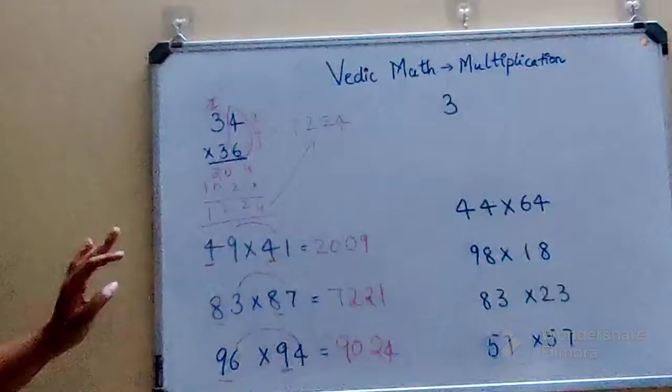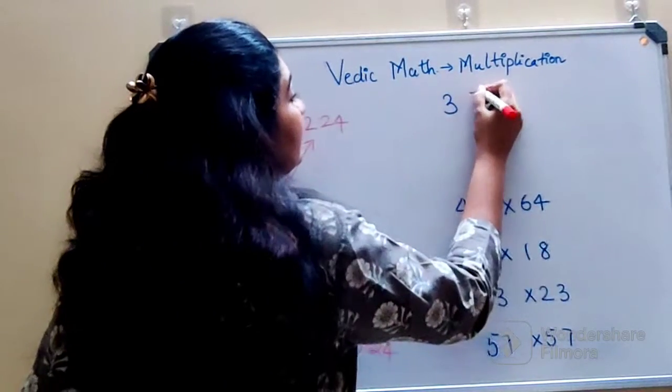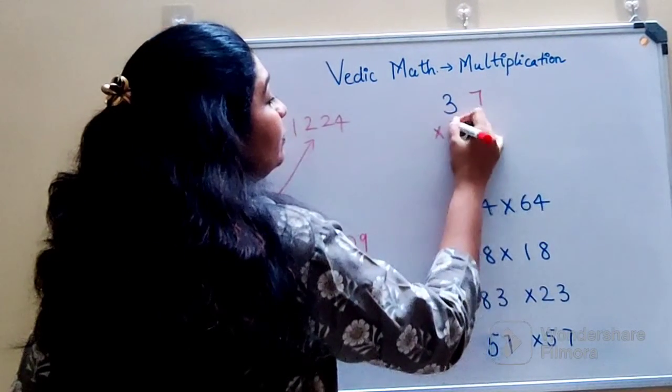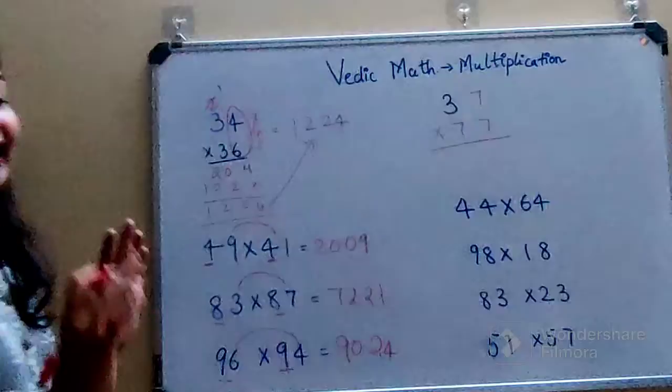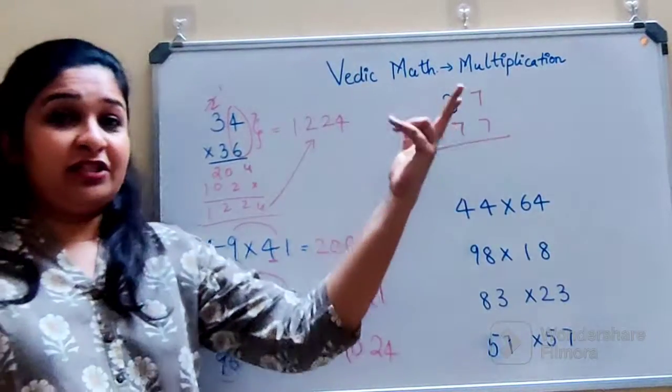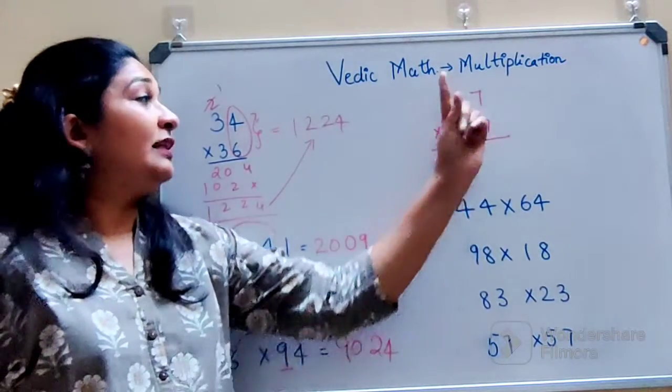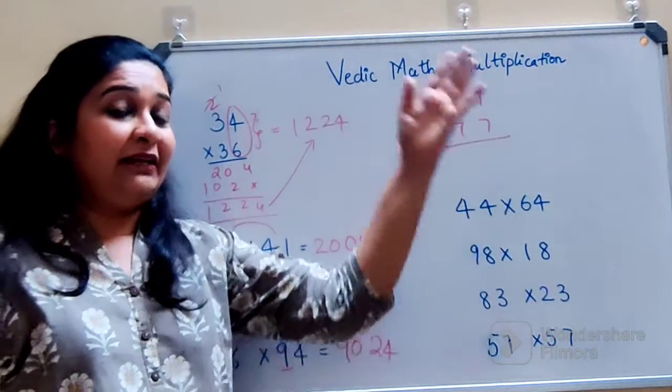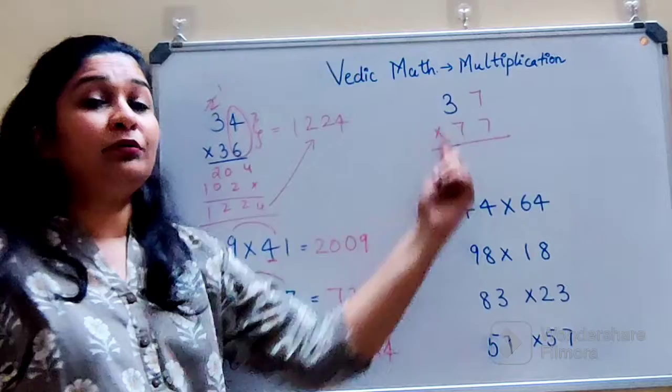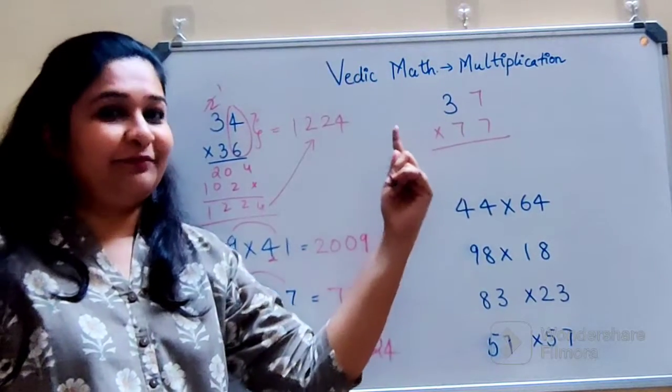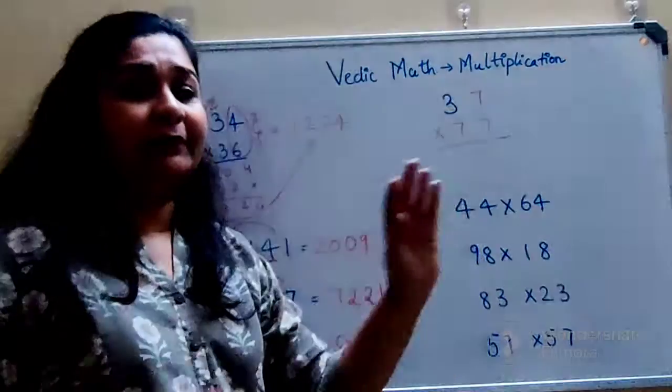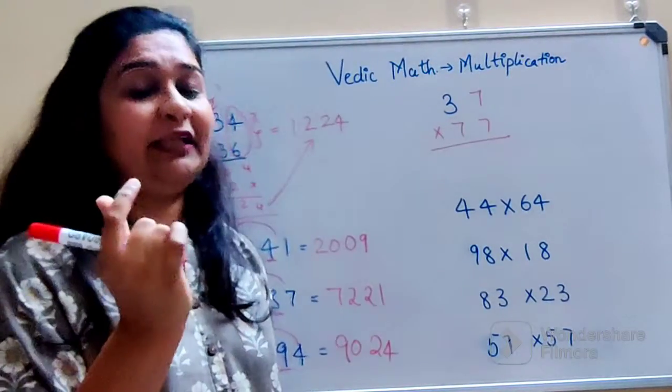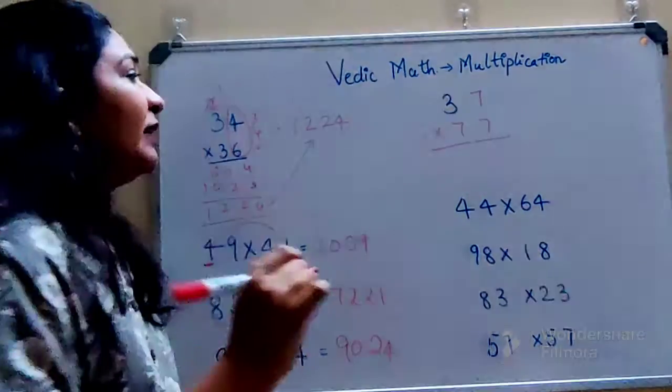So let's write this as 37 into 77. So now see, I understand. Here I have changed it. It has got interchanged. The last digit is same and the first digit is adding up to 10. So when they add up to 10 and the last digit is same, the trick gets changed a little bit. Very little.